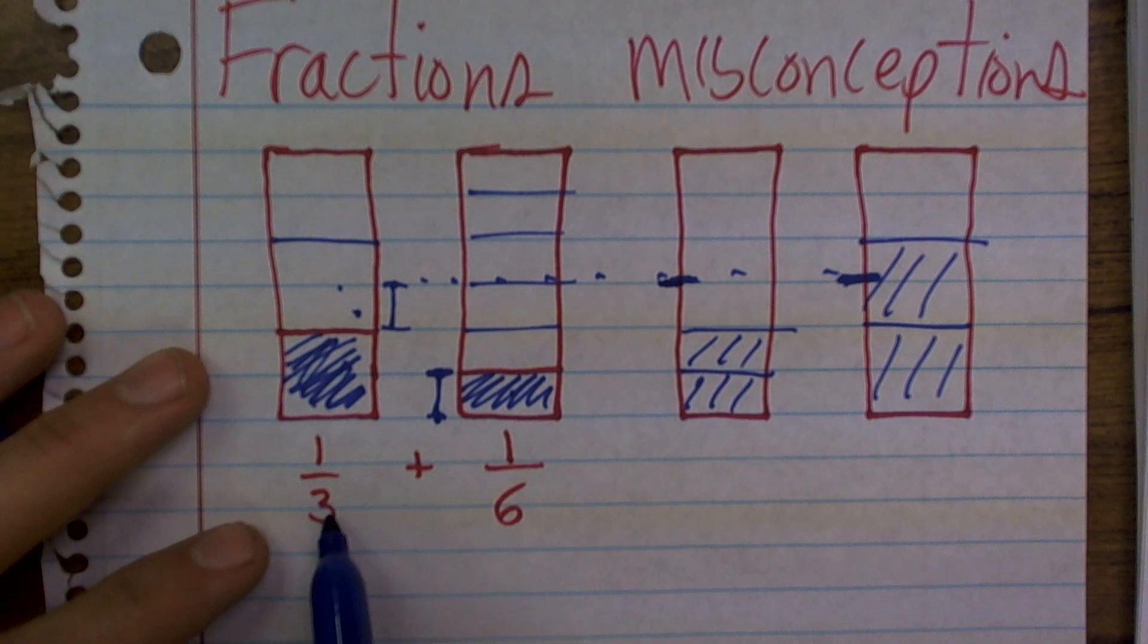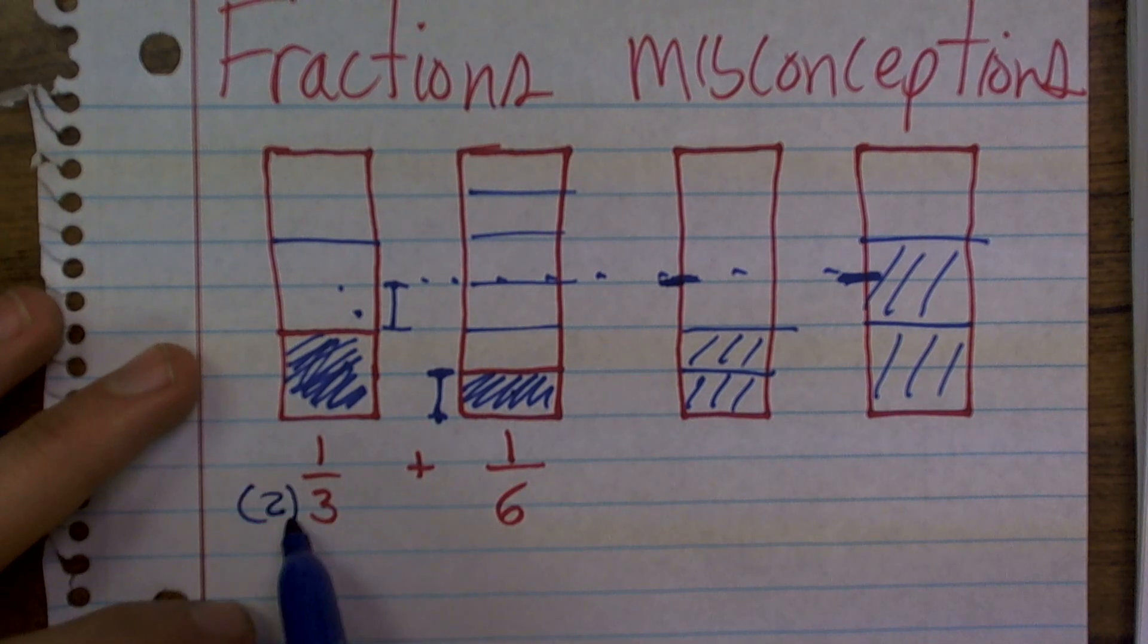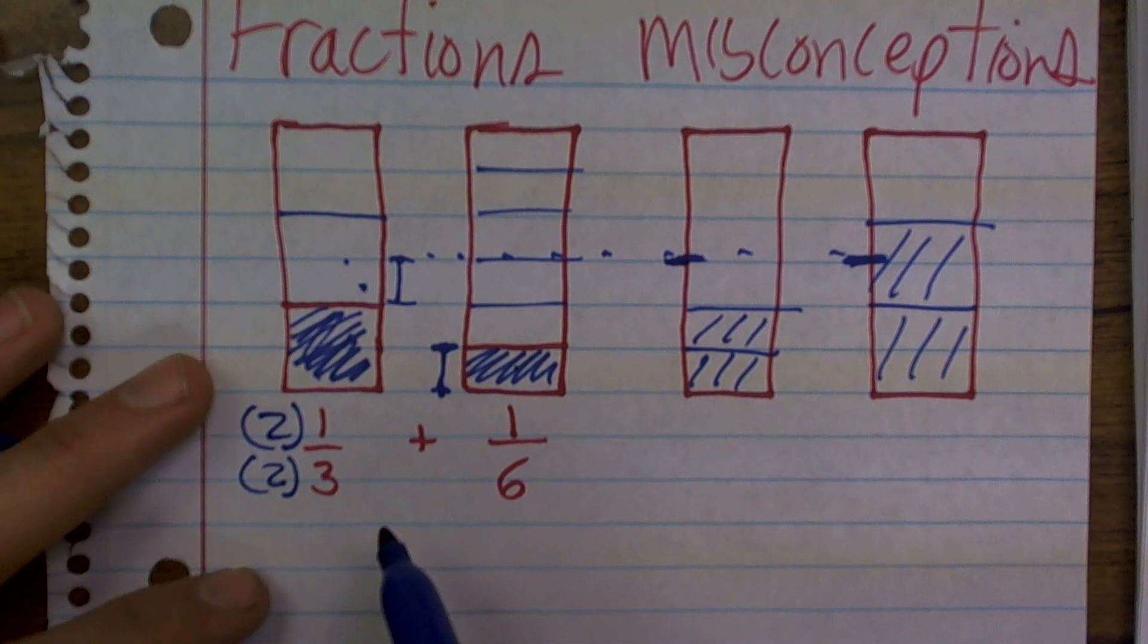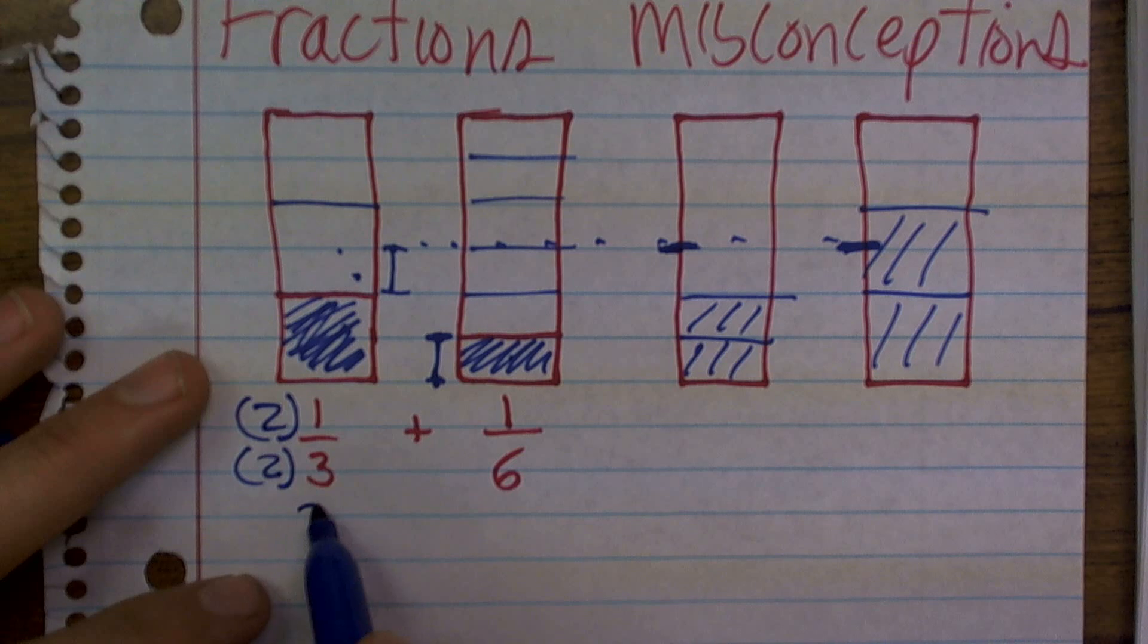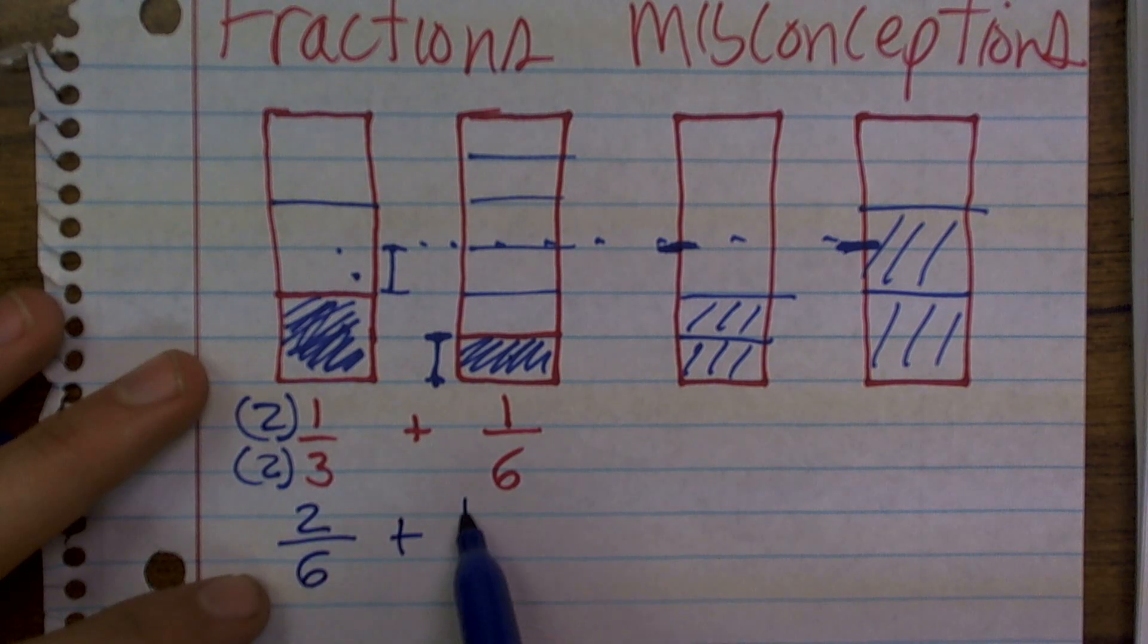So anyways, going back to adding these two fractions, to get three to be a six, I need to multiply by two. You need to make sure you multiply by two on the top and bottom to keep your fraction equivalent. Therefore, two times one is two, and two times three is six. Add that over to one-sixth,